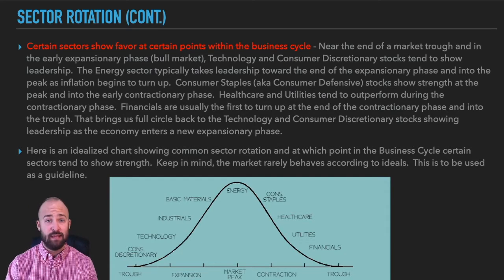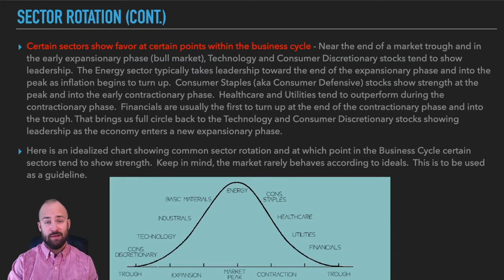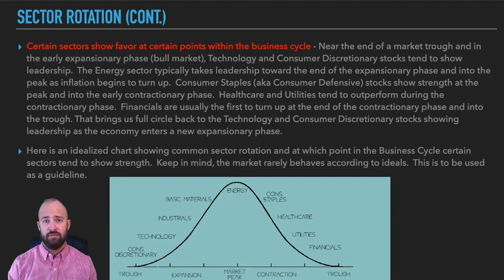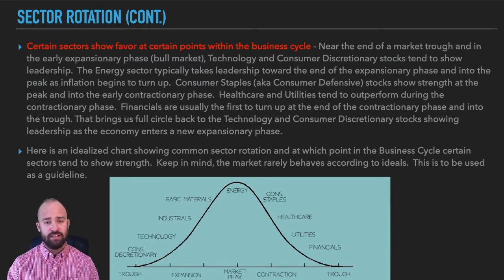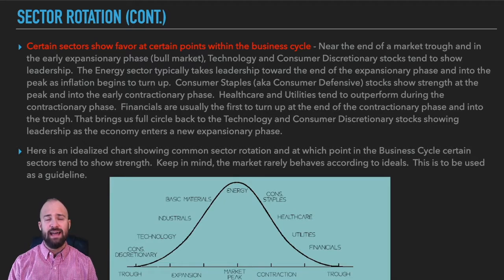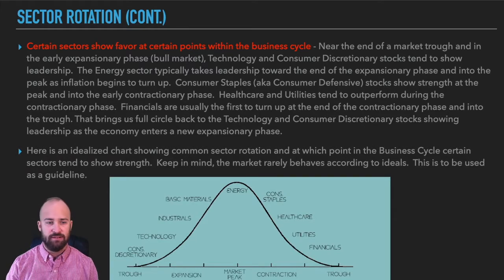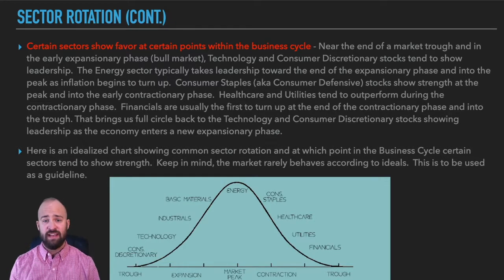After that, as inflation picks up even more, you might start to see the energy sector showing leadership. At this point, GDP has been growing for quite some time, so demand is high — demand for oil and energy in particular. As the economy heats up and inflation is on the rise, the price of oil is likely to increase as well. When you have strong demand for oil and an increasing price, that's going to be extremely beneficial to energy companies. So when you start to see energy taking leadership in the market, it's a warning sign that you're probably approaching a market peak. If inflation continues to rise, interest rates are also likely to rise, dampening economic output and rolling us over into a new contractionary phase. At that point, you might start to see leadership from consumer staples, healthcare, utilities, and eventually financials.